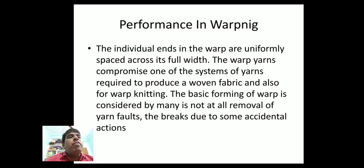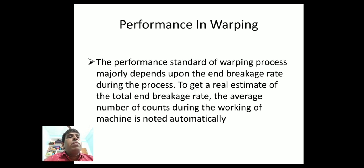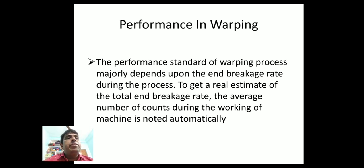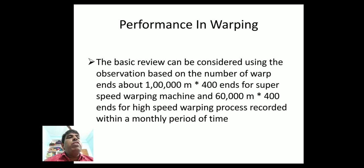The basic forming of warp is concerned with the removal of yarn faults and breaks due to some accidental actions. The performance standard of the warping process majorly depends upon the breakage rate during the process. To get a real estimate of the total end breakage rate, the average number of cones during the working machine is noted automatically. The basic review can be considered using observations based on the number of ends per one lakh meters.